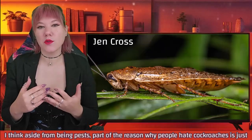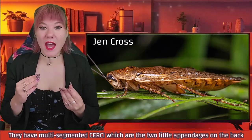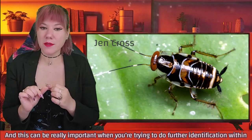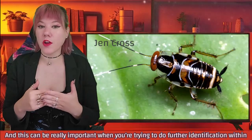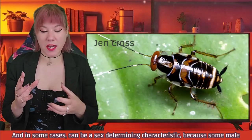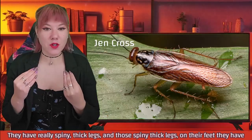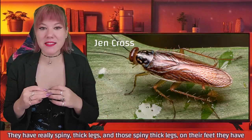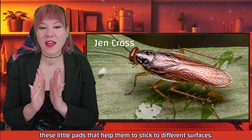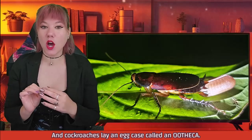And aside from being pests, part of the reason why people hate cockroaches is just that you can't see their face and their eyes. They have multi-segmented cerci, which are the two little appendages on the back end of the cockroach. This can be really important when you're trying to do further identifications within the cockroach group, and in some cases can be a sex-determining characteristic because some male cockroaches have asymmetrical cerci. They have really spiny, thick legs, and on their feet they have little pads that help them stick to different surfaces. Cockroaches also lay an egg case called an ootheca.